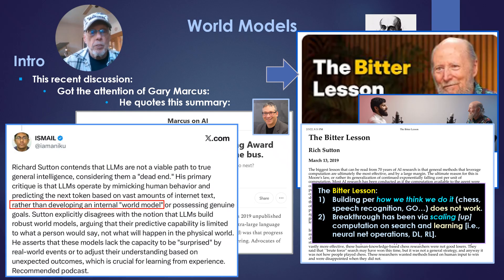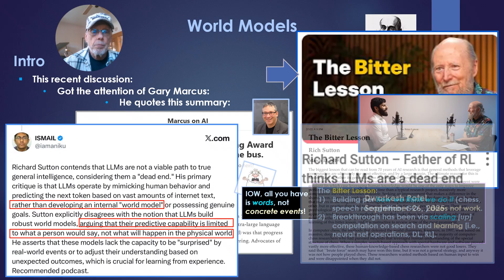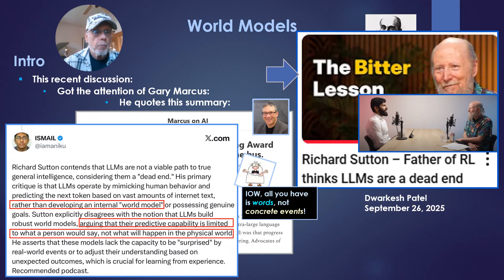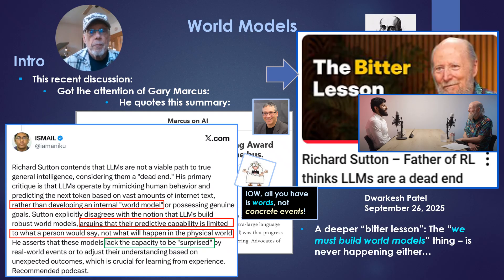Sutton explicitly disagrees with the notion that LLMs build robust world models, arguing that the predictive capability is limited to what a person would say, not what would happen in the physical world. In other words, all you have is words, not concrete events. He asserts that these models lack the capacity to be surprised by real-world events, or to adjust their understanding based on unexpected outcomes, which is crucial for learning from experience.